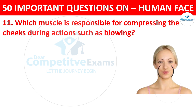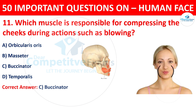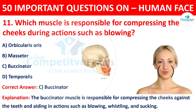Question number eleven: which muscle is responsible for compressing the cheeks during actions such as blowing, whistling, and sucking? The options are orbicularis oris, masseter, buccinator, or temporalis. The correct answer is C, buccinator. The buccinator muscle is responsible for compressing the cheeks against the teeth, aiding in actions such as blowing, whistling, and sucking.